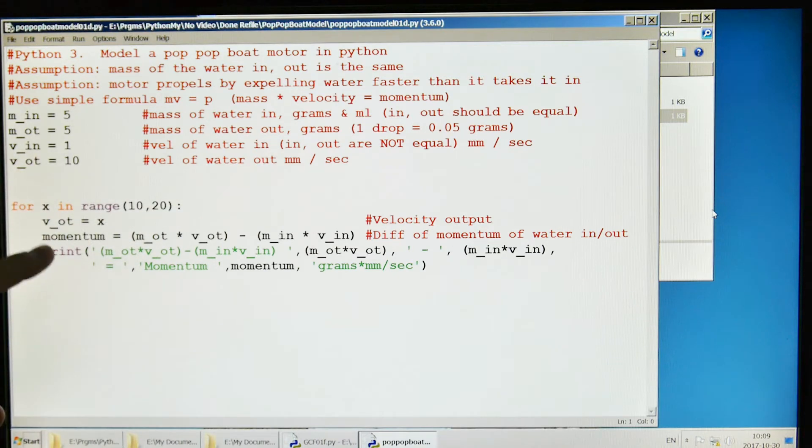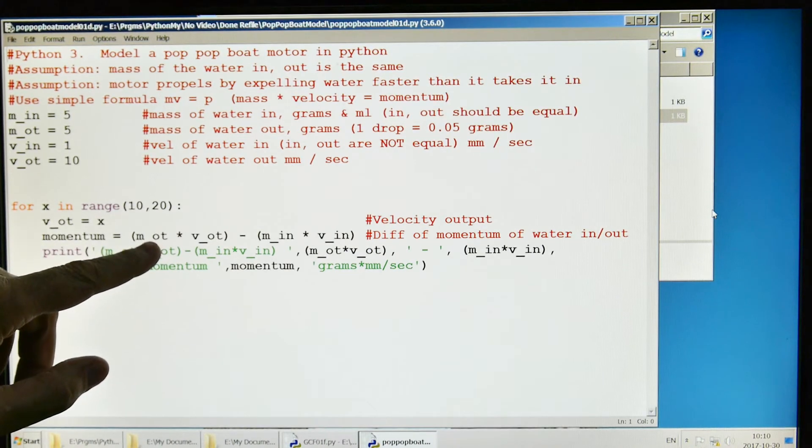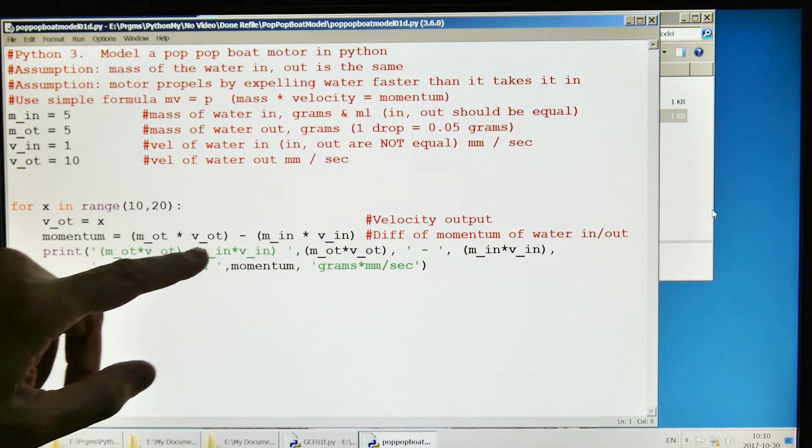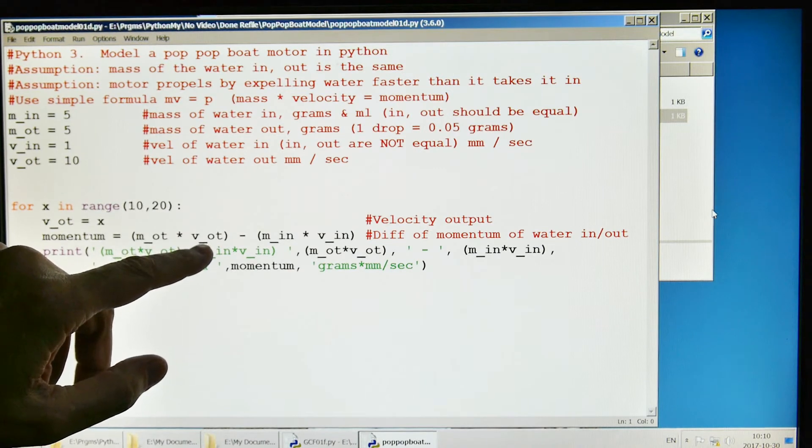So velocity in, velocity out. We come down here and what we're going to do is vary the velocity out between 10 and 20 millimeters per second. We grab the first one, we're going to start out with 10. Velocity out will be 10 and we're going to plug it into our formula.